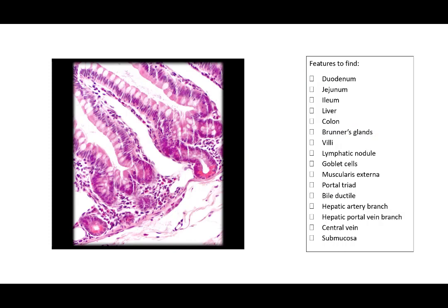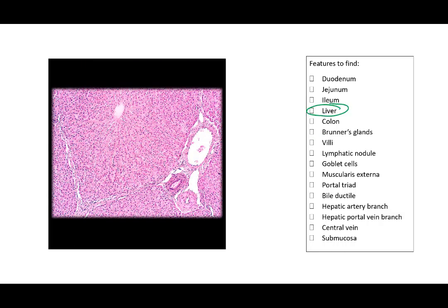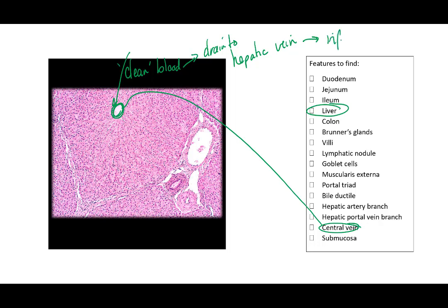This is an extremely zoomed-in view of a single villus. I want you to know it's a villus by its shape, and that simple columnar epithelial tissue actually makes up the villi, with circular white areas embedded throughout — mucus being produced by goblet cells. This here is going to be the liver. We can actually see the central vein, which is where we have the already-filtered, clean blood. The central vein drains into the hepatic vein, which then takes it over to the inferior vena cava.